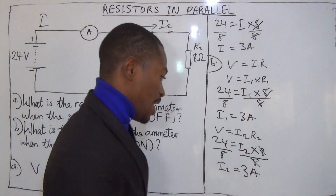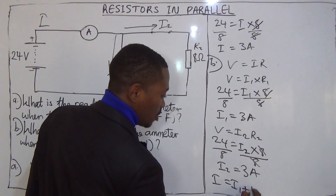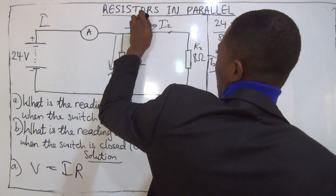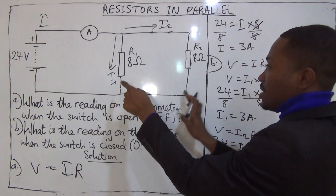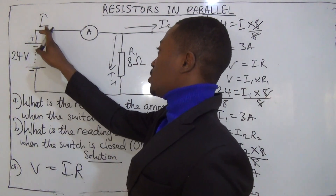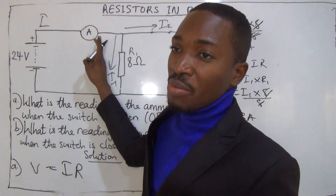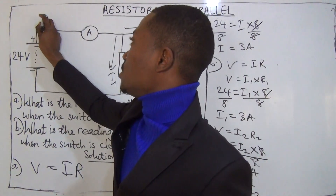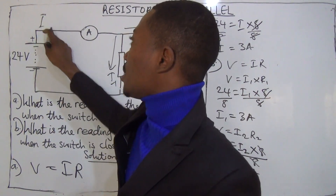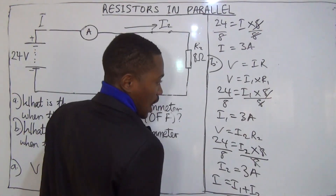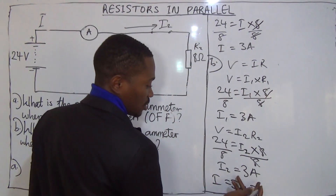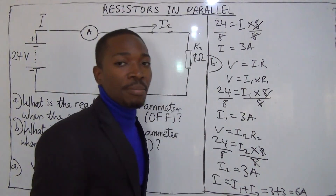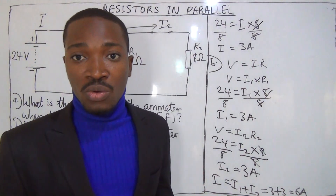Now, how do I get the value of I? I equals I1 plus I2. This current I is the sum of I1 and I2, because when I1 and I2 combine, that gives us I, and it will flow through the battery and be read by the ammeter. I1 is 3 and I2 is 3, so our I is 3 plus 3, which equals 6 amps. That is what the ammeter will read.